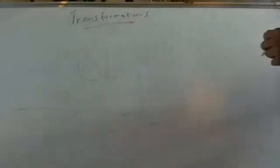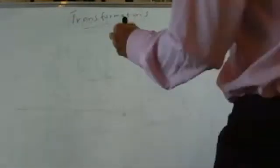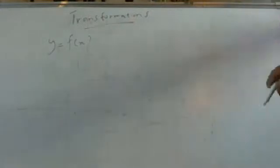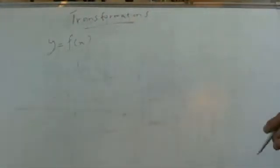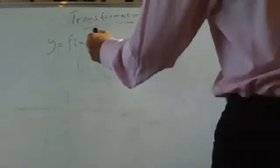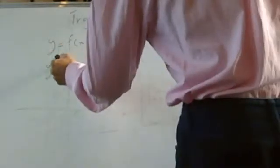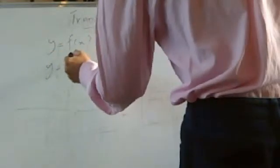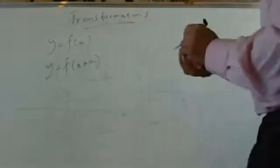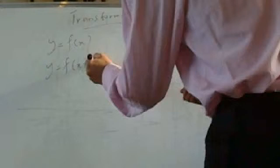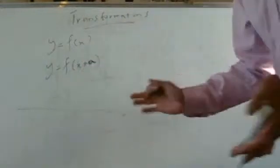So what we're going to do is go through the theory first. So let's say we have a graph y equals f(x) — it's any graph. If we have a transformation y equals f(x + a), where a is any number — it could be plus 2, plus 3, plus 1, anything like that.